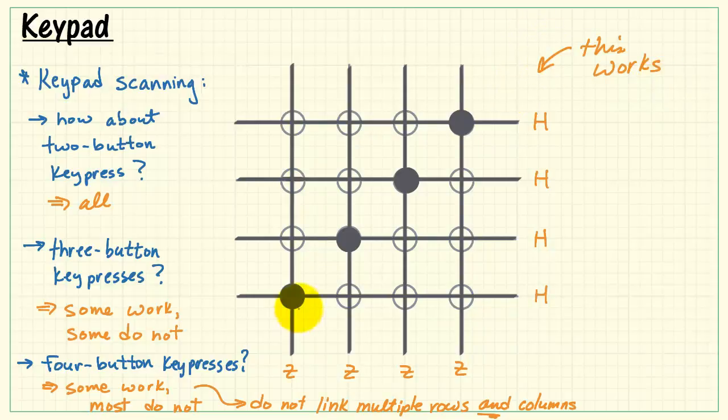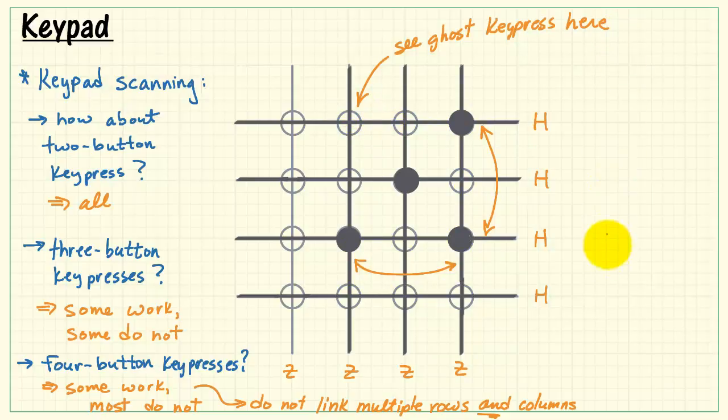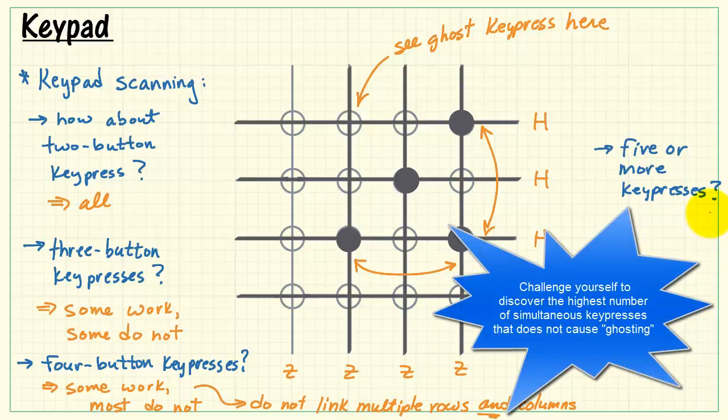We'll take a look at some quick examples. This one works fine. This one also works, even though we have multiple rows being linked along this column. We still are not linking across columns, so this particular combination works fine. However, if I move to a closed switch right here, here we link two row lines together by these switches, and link together two column lines, and that means you will see a false indication up here. Well, five or more key presses, I'll leave you with this. Challenge yourself to discover the highest number of simultaneous key presses that does not cause ghosting.